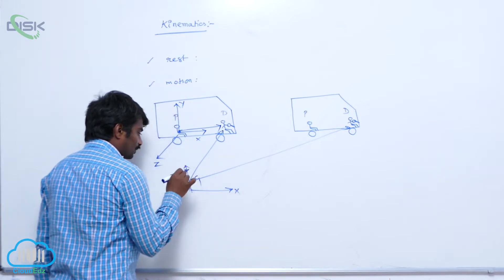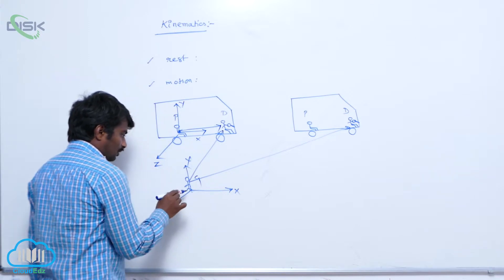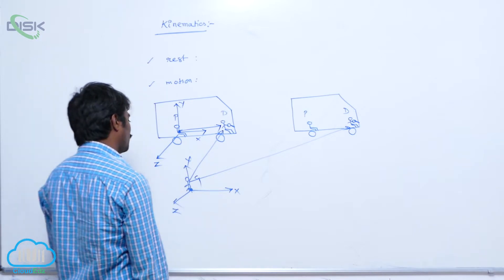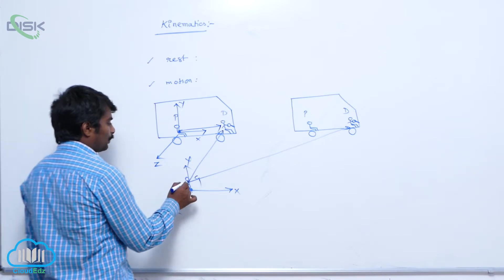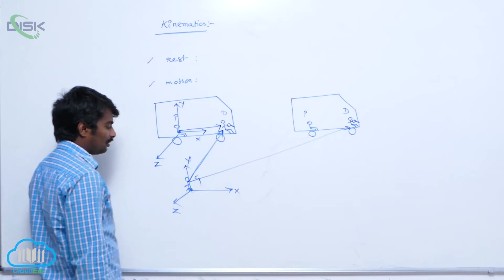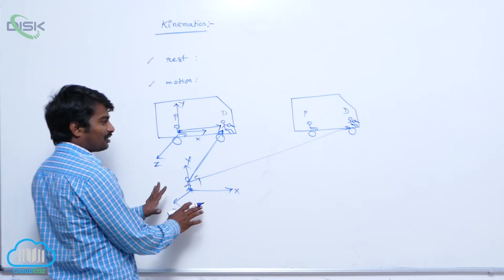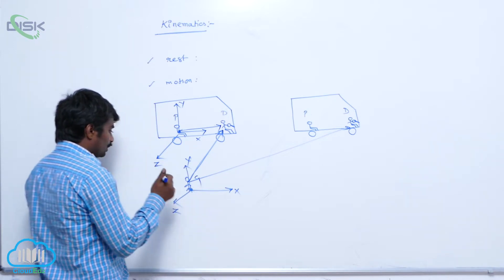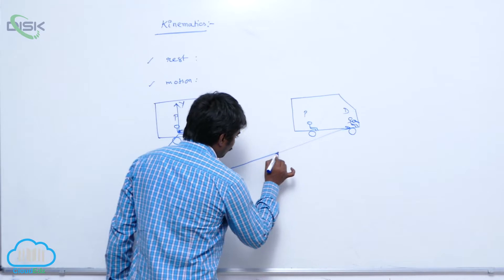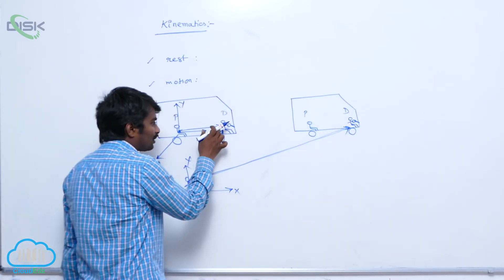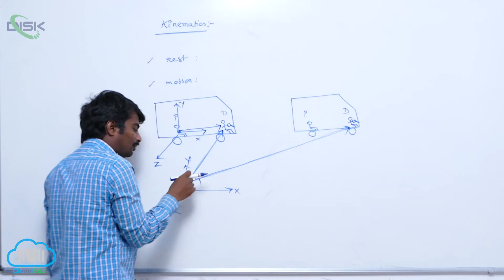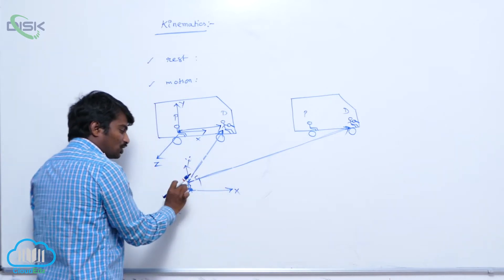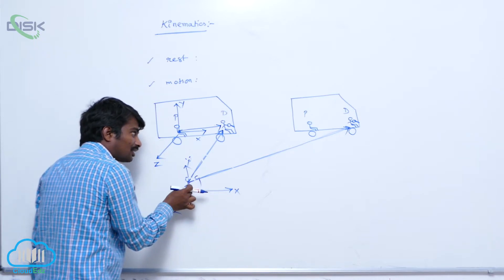In the same way, we take another coordinate system for the person on the ground, and assume that this person is at the origin of that coordinate system. We take the position vector of the driver from this reference frame. Here the position vector of the driver is changing with time with respect to this person's reference frame, and that is why this person answers that the driver is in motion.